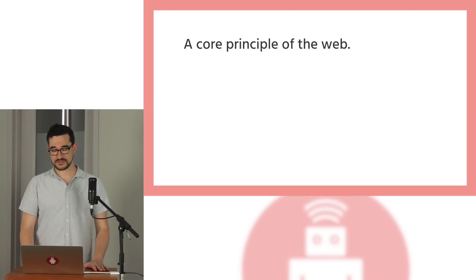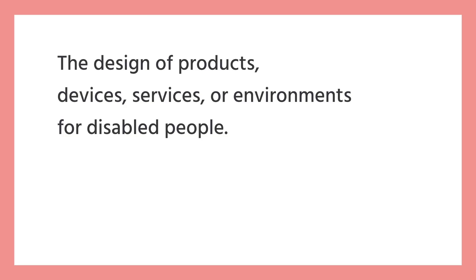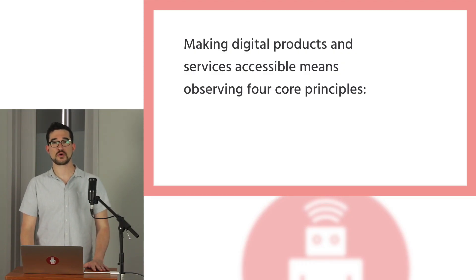In honoring these principles, we help to remove barriers to communication, information, and interaction that many people face in the physical world. In the more immediate sense, accessibility is the practice of designing products, devices, services, and environments for disabled people. In the digital space, we have similar guidelines, and these guidelines are all shaped by four core principles. Use them as a guide to help determine if what you are making is accessible or not.